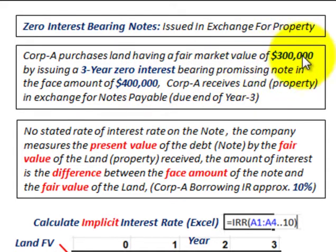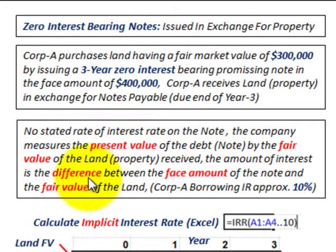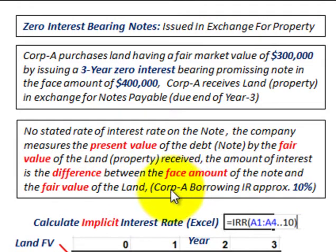The land's fair market value is $300,000 and there's no stated rate of interest on this note. The company measures the present value of the debt by the fair value of the land or property received. The amount of interest is the difference between the face amount of the note ($400,000) and the fair value of the land ($300,000).